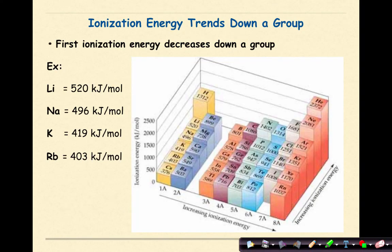Ionization energy trends down a group. First ionization energy will decrease going down a group. We can see it here by looking at some group one elements. Lithium is 520, sodium is 496, potassium is 419, and rubidium is 403. Because as those electrons get farther and farther away from the nucleus, the nucleus has less of a hold on those valence electrons, and it's easier to remove them.